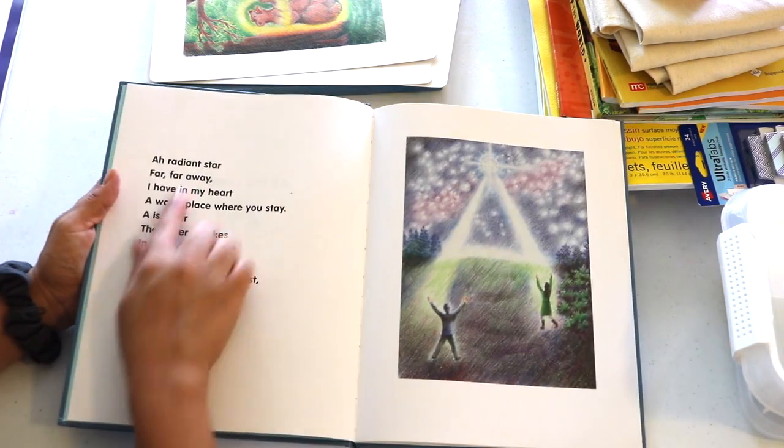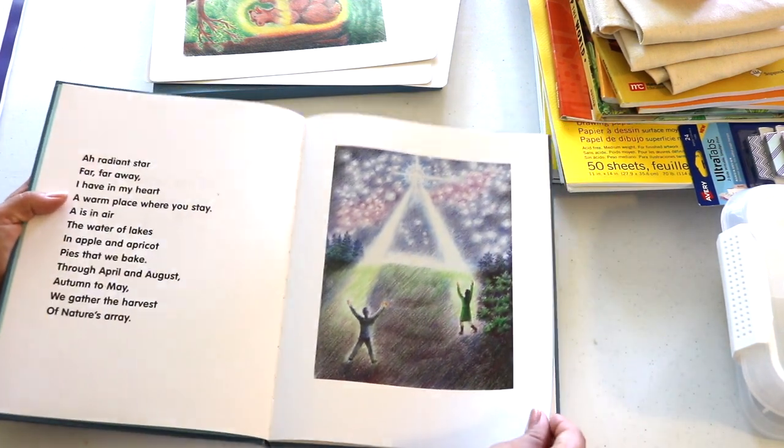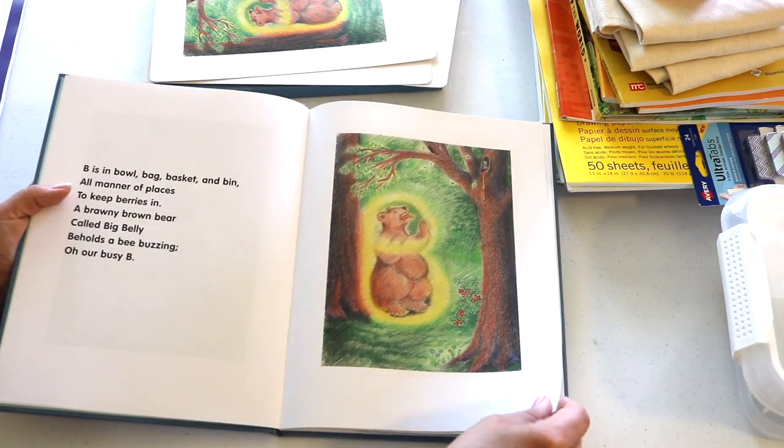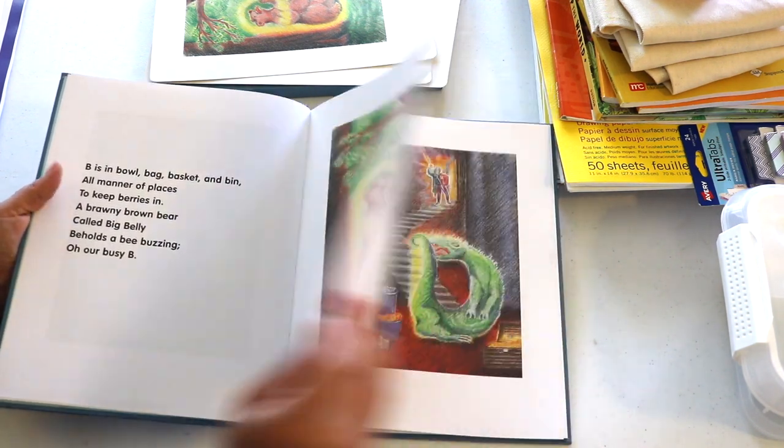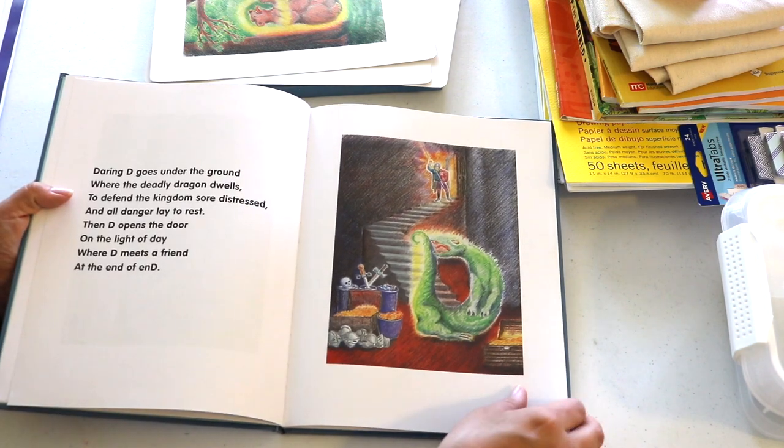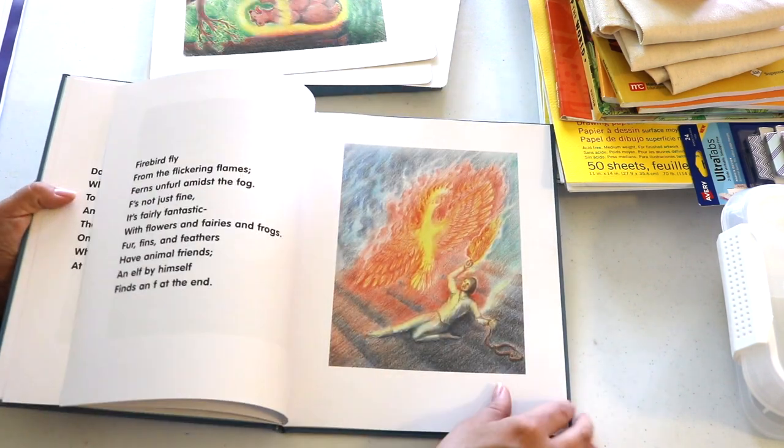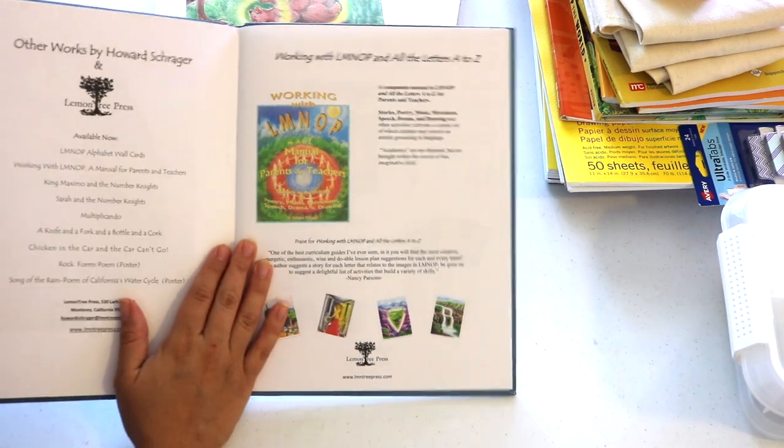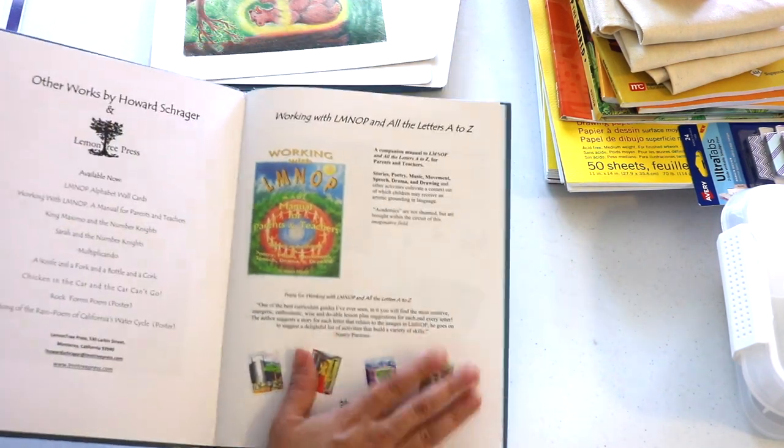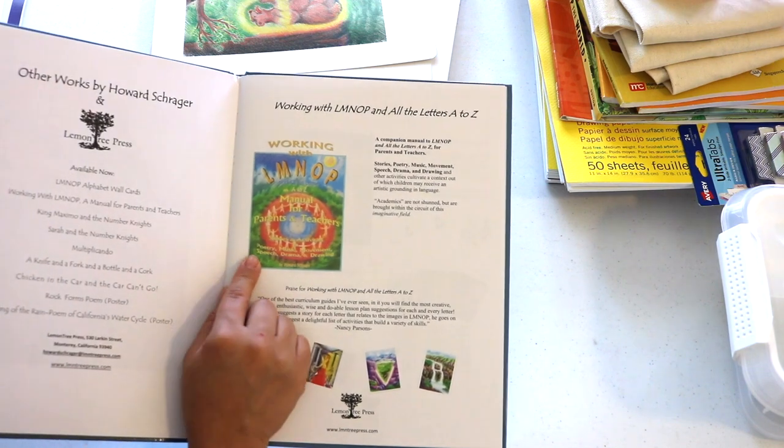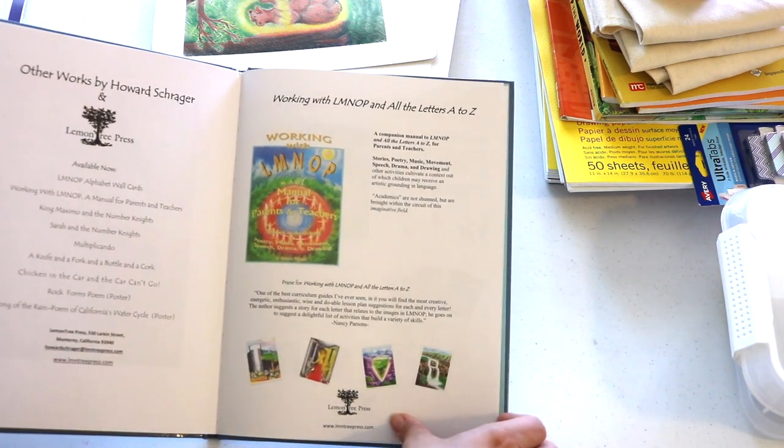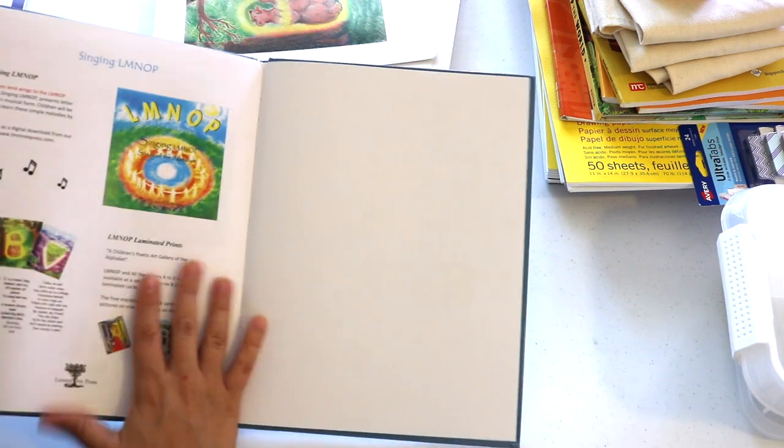On one side is a beautiful illustration with a capital letter within it, and then the other side is a poem corresponding and describing the picture but more emphasizing on the phonetic sound of the letter.